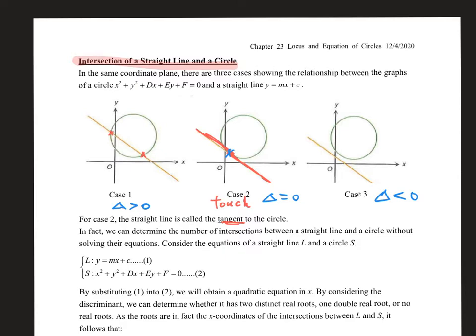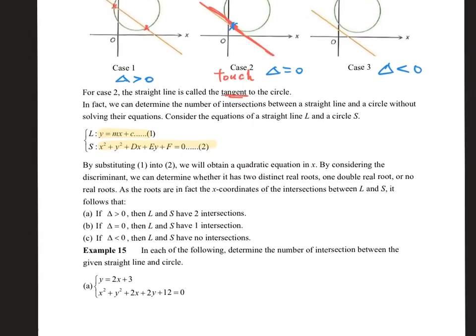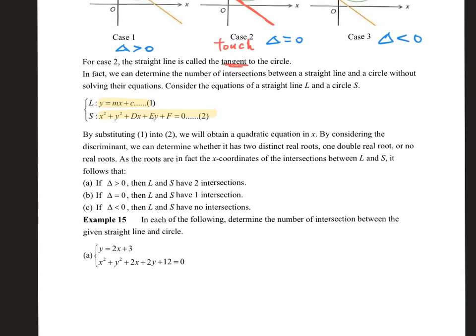Now the question is: where do we apply delta? You will see that the straight line can be written in slope-intercept form y = mx + c, while the circle has its general form. Some students mistakenly apply delta directly to the line equation — for example, taking 2x − y + 3 = 0 and computing delta as (−1)² − 4ac. Do you think that is correct?